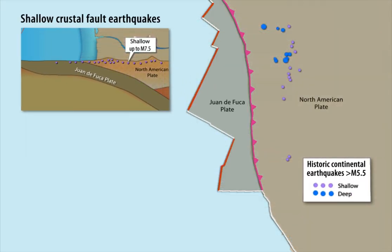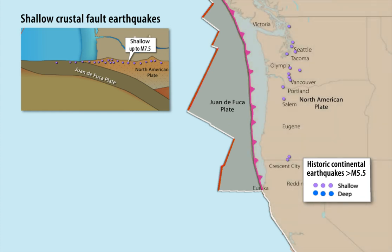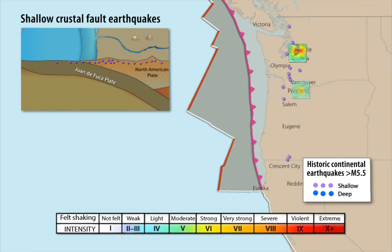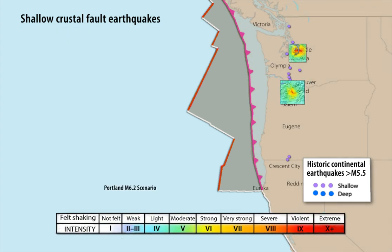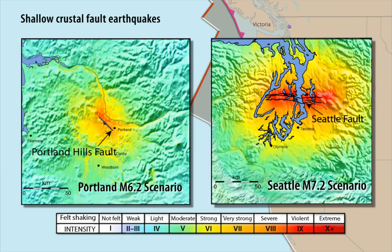Almost half of ShakeAlert-powered alerts will originate from shallow crustal fault earthquakes within the internally deforming North American Plate, about 10 kilometers below the surface. Examples include faults beneath city centers like Portland and Seattle that could cause loss of life and major damage. Because it takes a few seconds for ShakeAlert to detect earthquakes and for alerts to be delivered, those who live closest to the fault may not receive an alert until after the shaking begins.